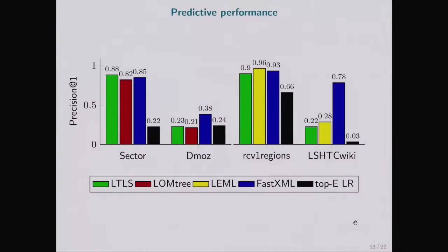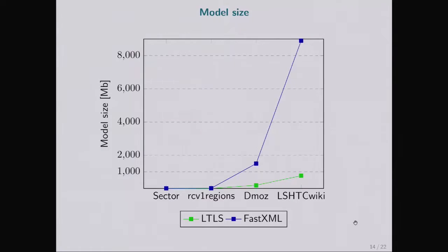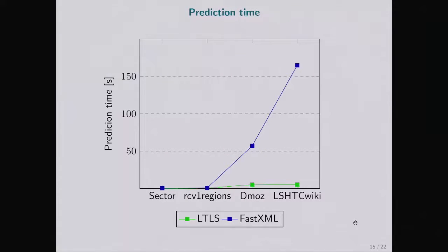We learned a logistic regression classifier for each of the E most frequent labels — as many as the number of edges we have. On this plot, LITTLES is in green and the baseline is in black. As you can see, we nearly always beat the baseline and are close to our competitors. When it comes to model size, compared with FastXML, LITTLES is much smaller, and of course much faster, even in Python.